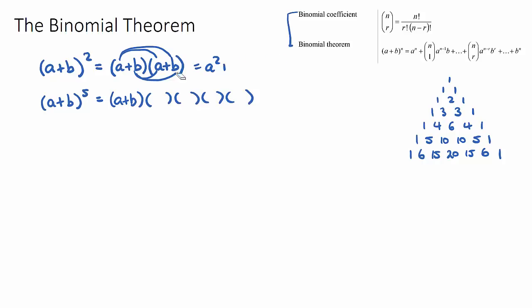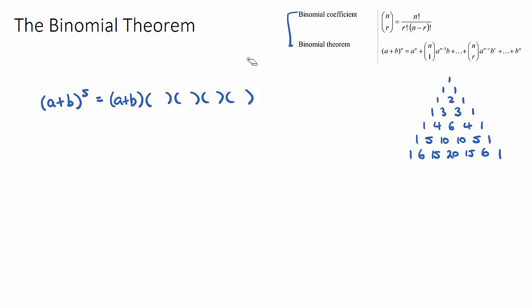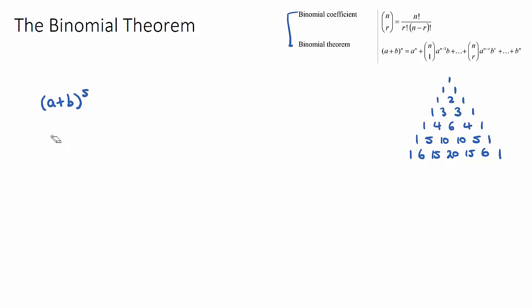Our example: we're going to try and expand a plus b to the power of five. In the questions you might be seeing, you might have different things in here than a and b — there might be x's, two x's, x squareds, or even fractions. So this is just a general example of two terms, a plus b to the power of five.